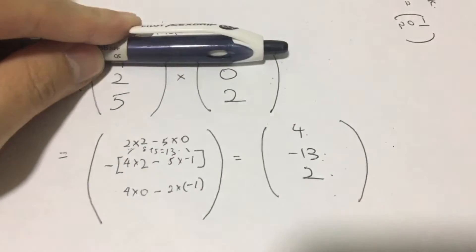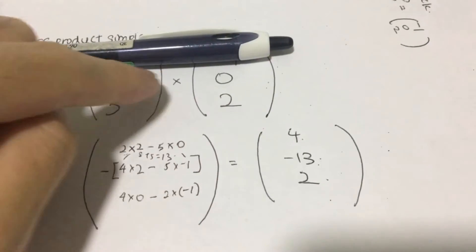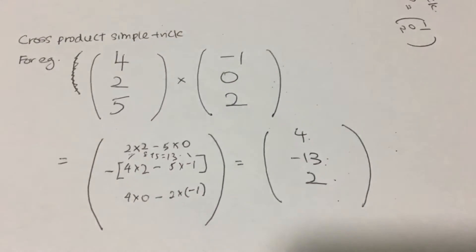So what you need to do is cover the first row, take the multiplication of this, minus away this times this.